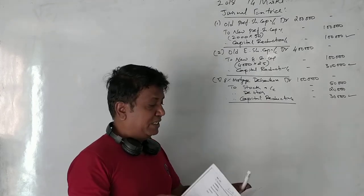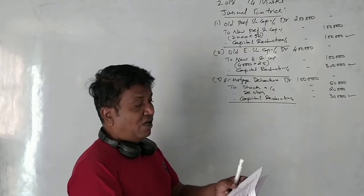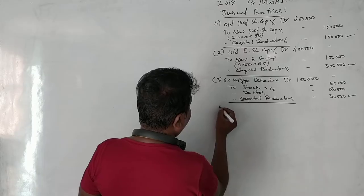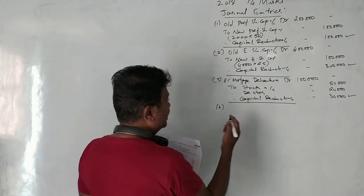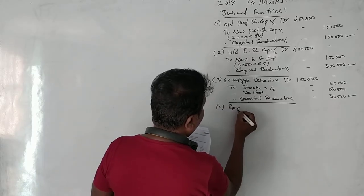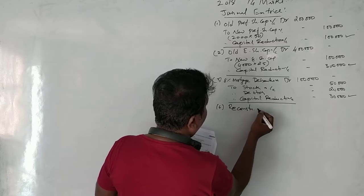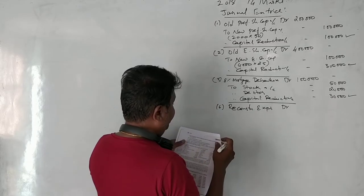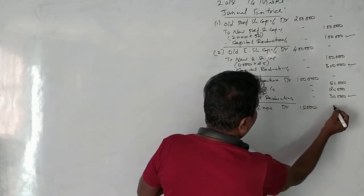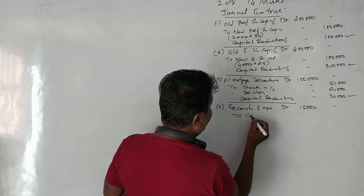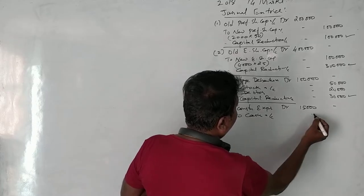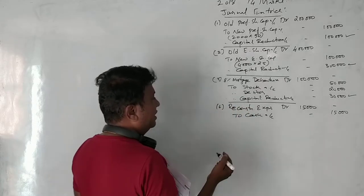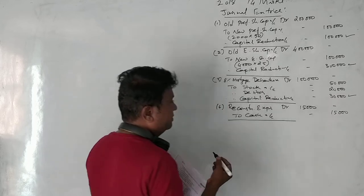Journal Entry 4: Cost of reconstruction is ₹15,000. Reconstruction expenses account is debited ₹15,000, and cash account is credited ₹15,000. Narration: being reconstruction expenses paid.